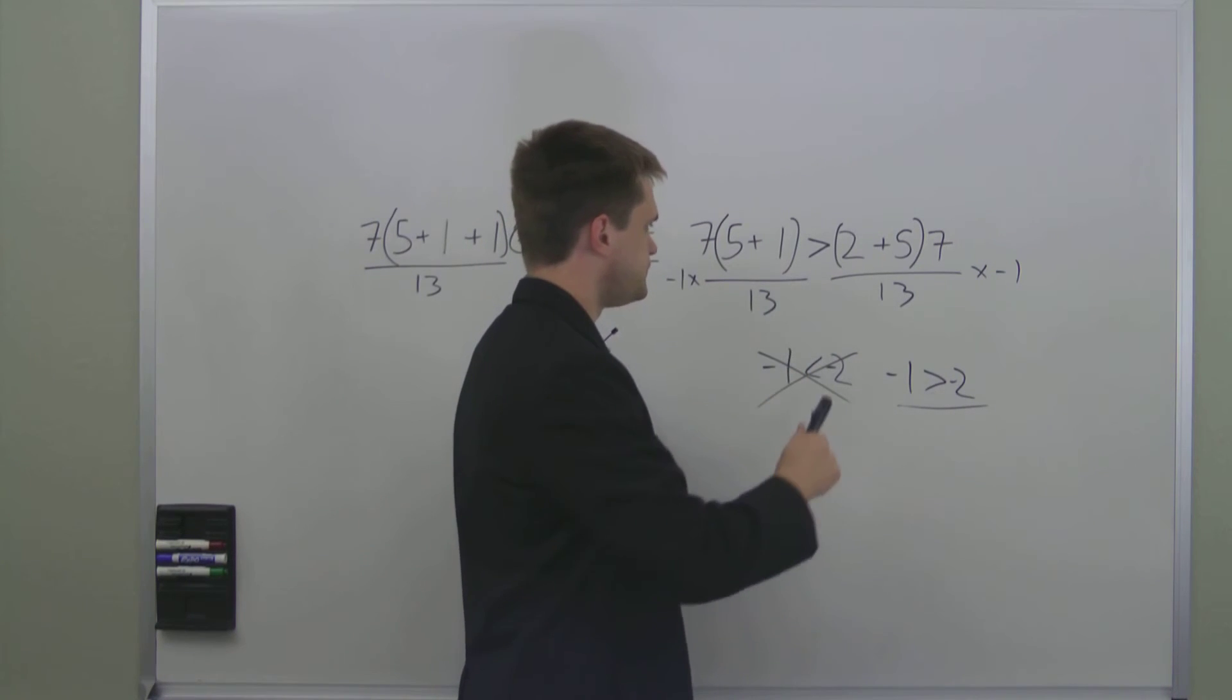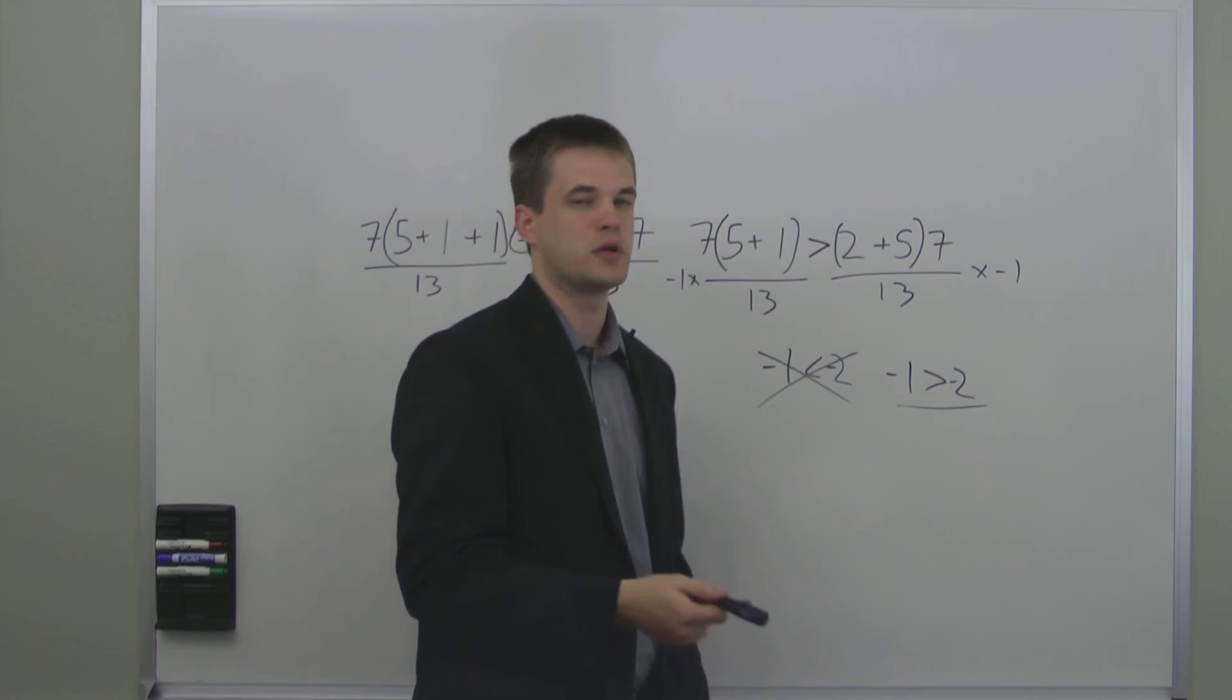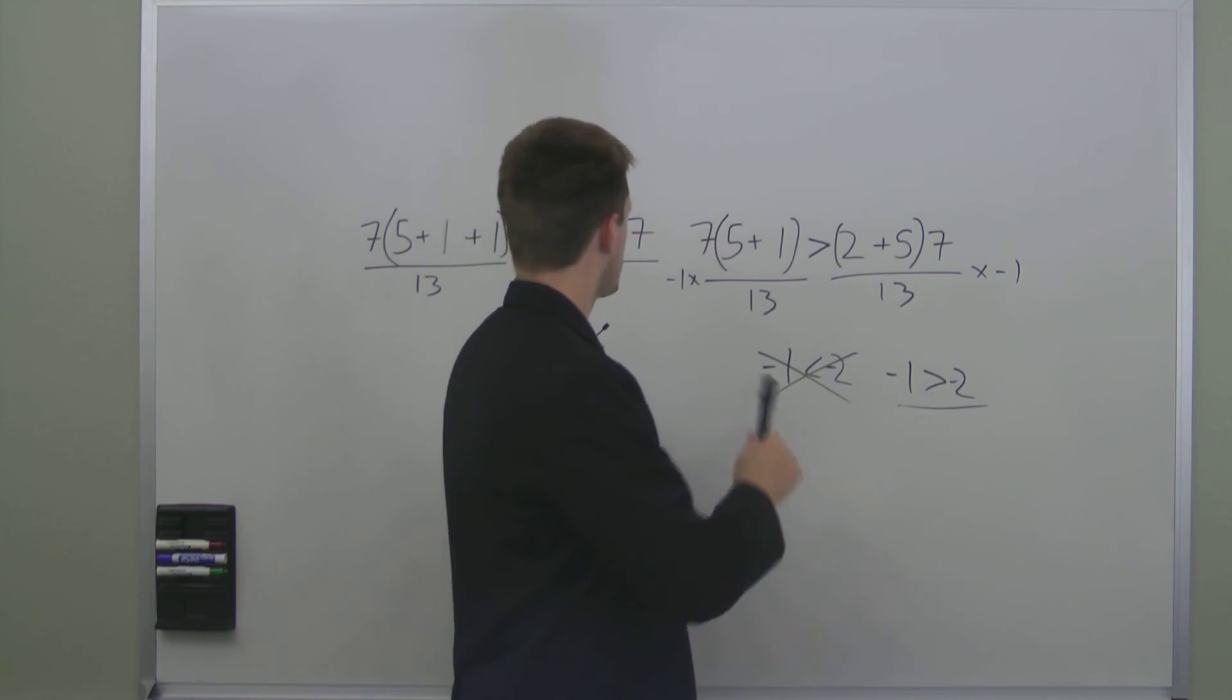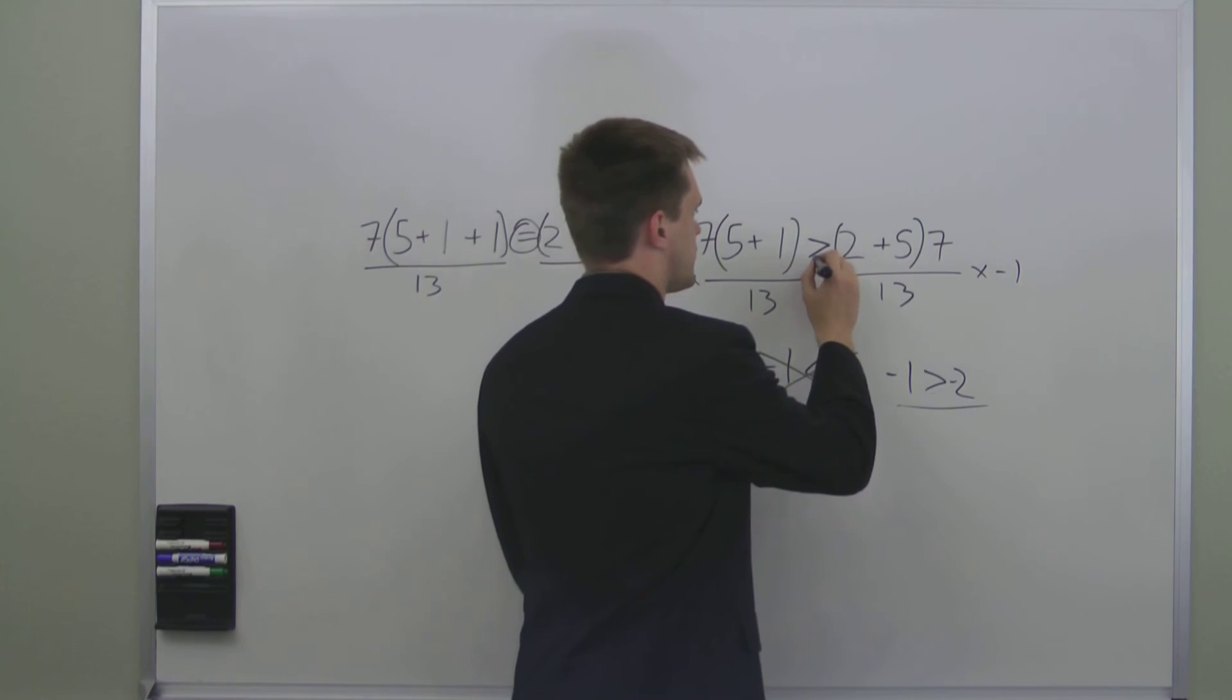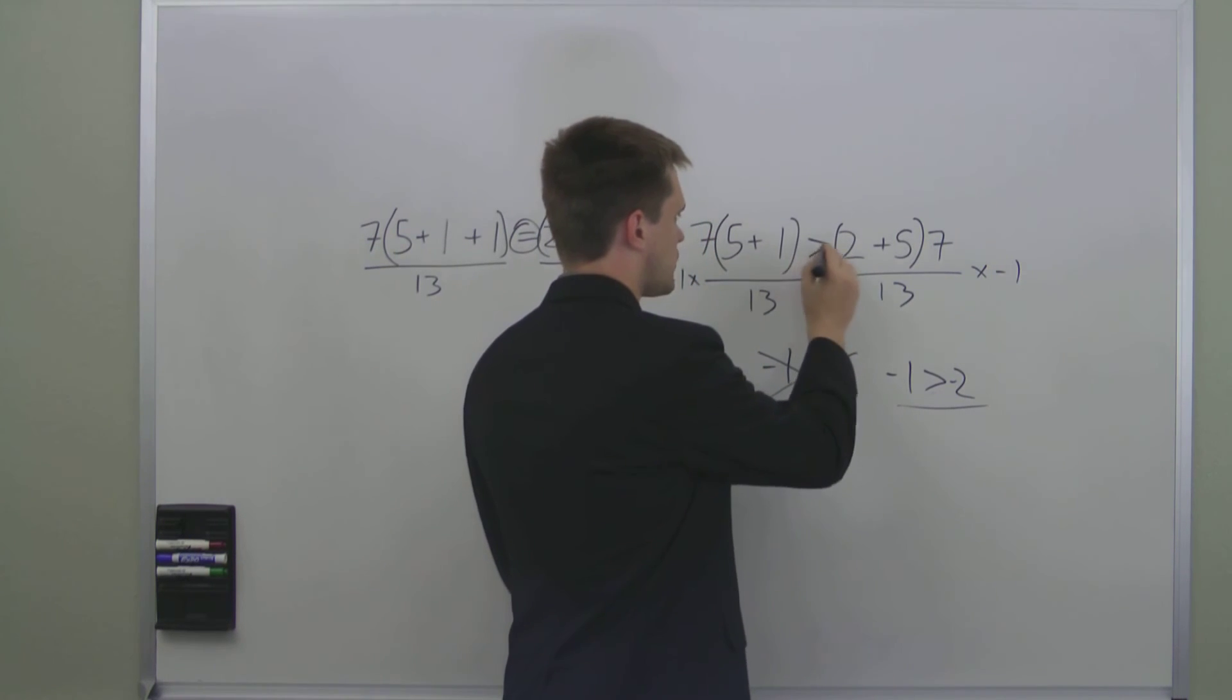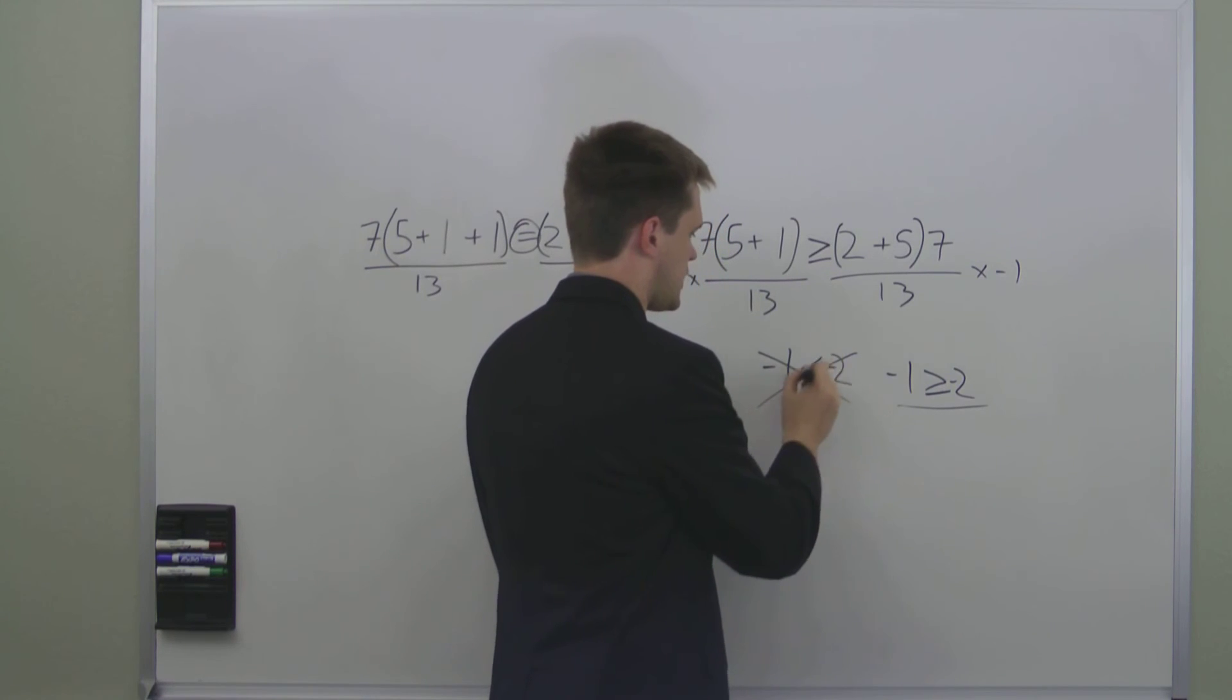And so you can have greater than or less than, and you can also have greater than or equal to, which is something of a combination of equations and inequalities. We would write greater than or equal to as a greater than sign with a line under it. And similarly less than or equal to would be less than with a line under it.